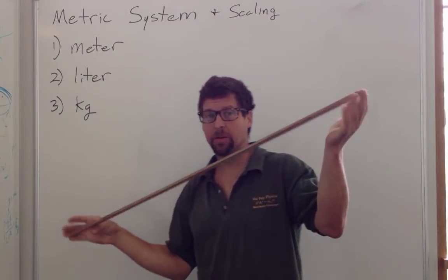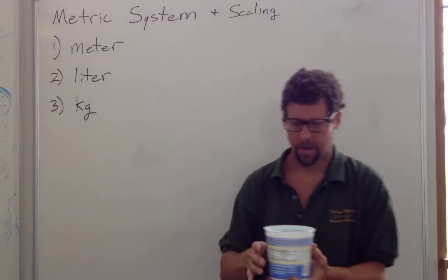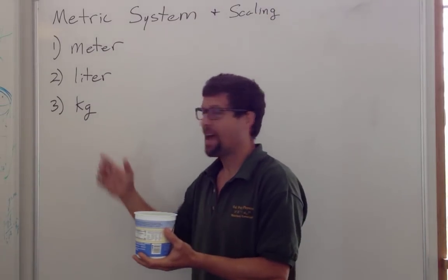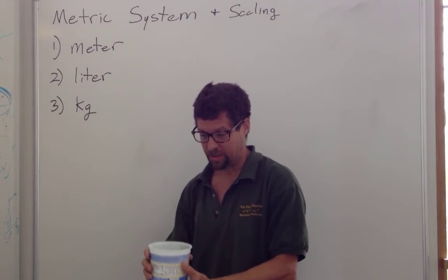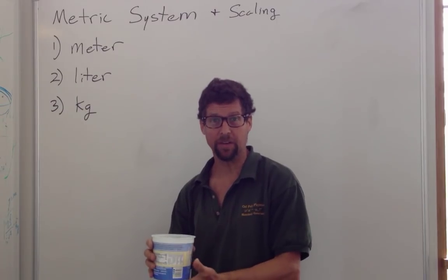The metric system is based on the meter, on the liter, and on the kilogram, which is the mass of one liter of water.